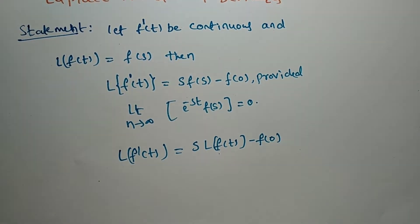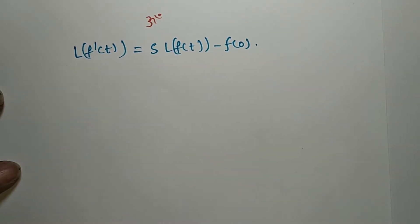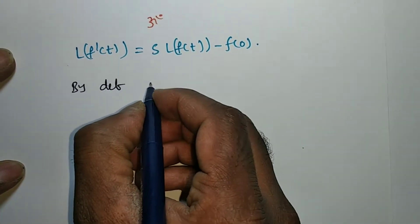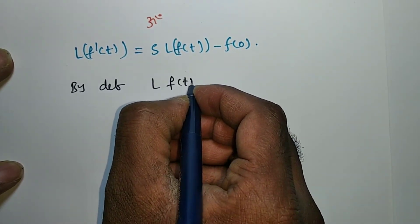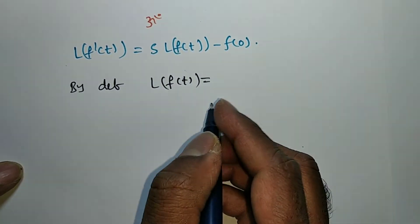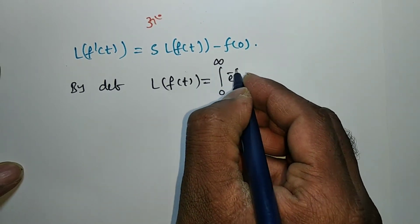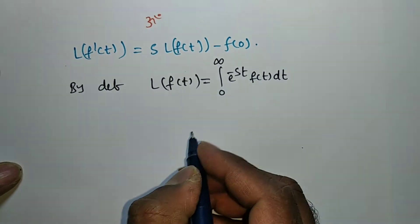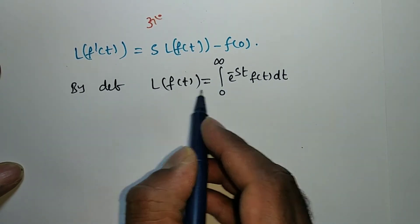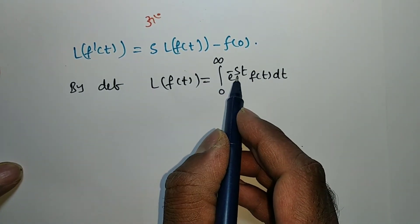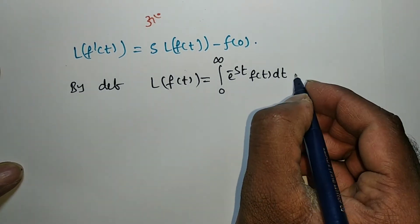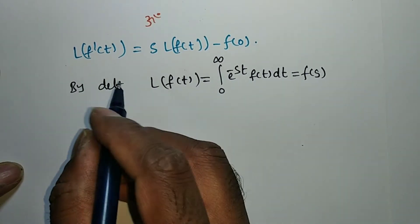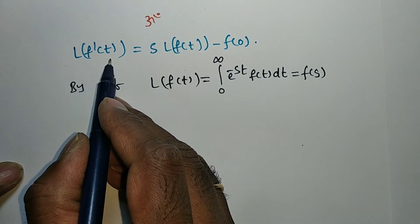By definition, we prove this. L{f(t)} = integral from 0 to infinity of e^(-st)·f(t) dt, and this is denoted as F(s). Now, what we want is L{f'(t)}.